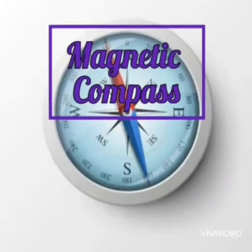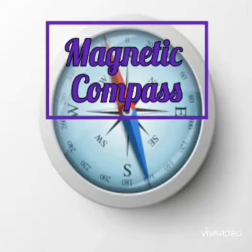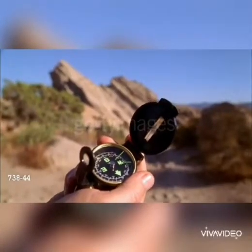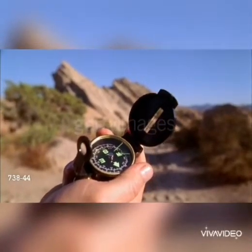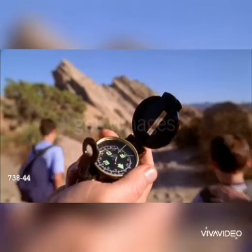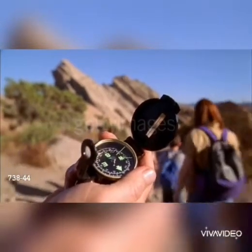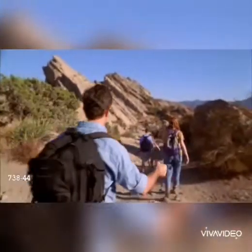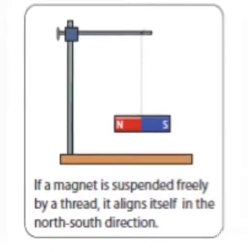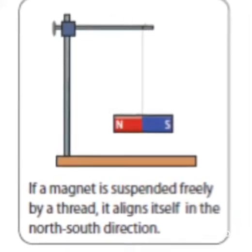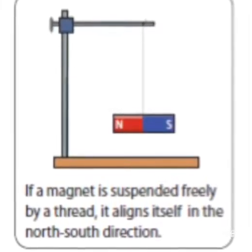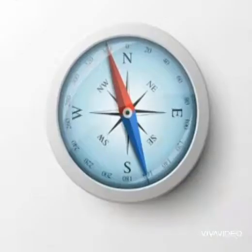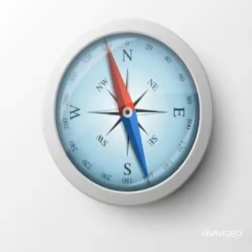Our next topic is the magnetic compass. The compass is an instrument to find directions at a place. It is a device that is used to find the direction of any location. The compass is based on the property of a freely suspended magnet to align itself along the north-south direction.